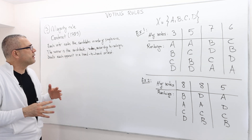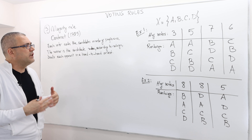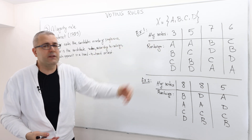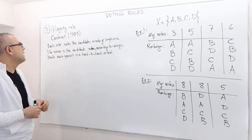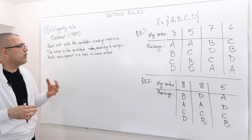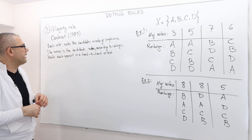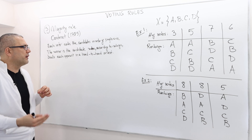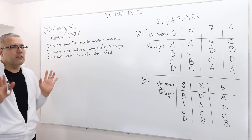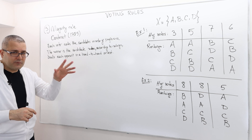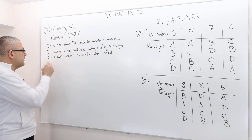Each voter ranks the candidates in order of preference, as we did in our simple example. The winner is the candidate who, according to those rankings, beats each opponent in a head-to-head contest. So let's apply it on those examples.